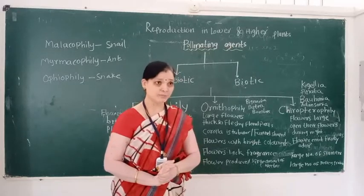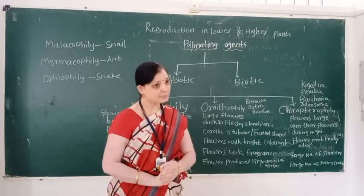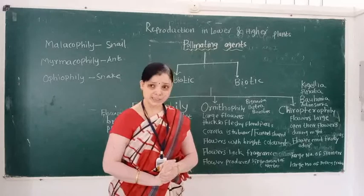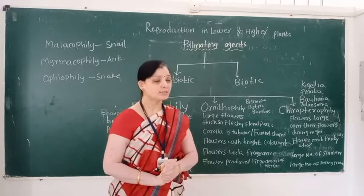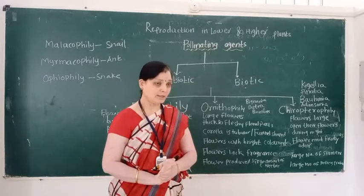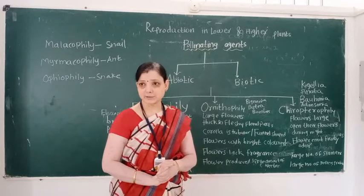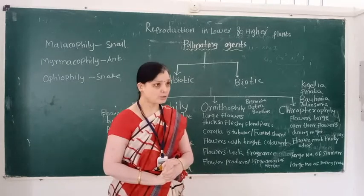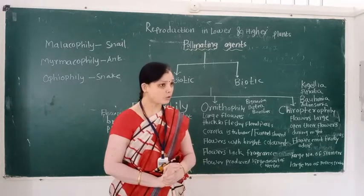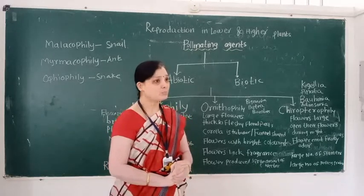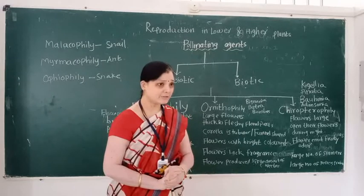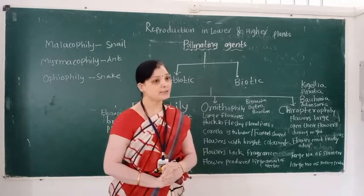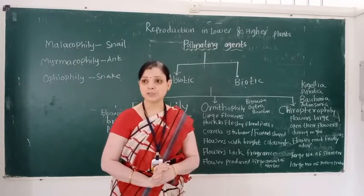When pollination takes place below the water surface it is called hypohydrophily, and when pollination takes place on the surface of the water it is called epihydrophily. We also learned the floral adaptive characters of anemophily: flowers are small and inconspicuous, flowers do not consist of nectar glands, flowers are colorless and not attractive, pollen grains are produced in large quantity, pollen grains are light in weight, and the anther is versatile. Smooth pollen grains are present.